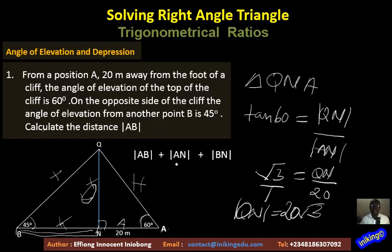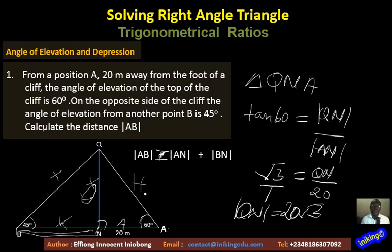Now we know the length QN, so we can consider triangle QBN to find the length BN. Once we have BN, we can calculate AB. Our objective now is to find BN. AB = AN + BN, where AN is already known as 20. From what we've just done, we obtained QN = 20√3 from triangle QNA.